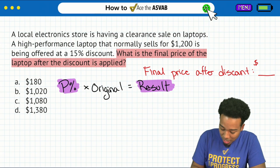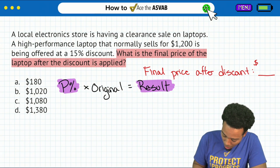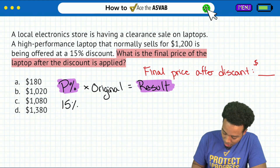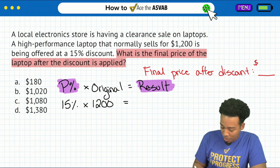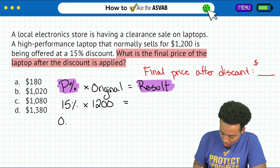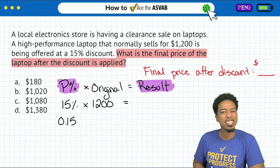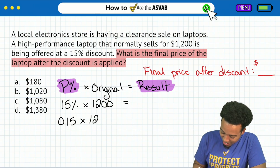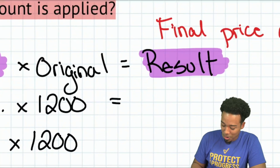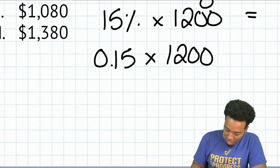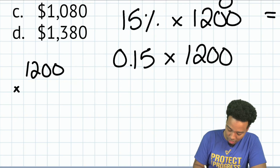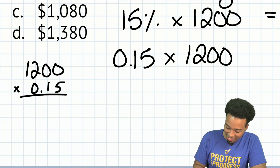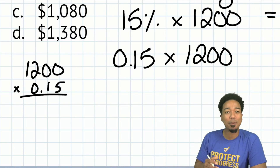This is the mistake that a lot of people make. I'll plug in 15% of the $1,200. Most of us will go ahead and convert that to a decimal — move the decimal place over two times — then multiply that by 1,200. So we calculate 1,200 times 0.15.